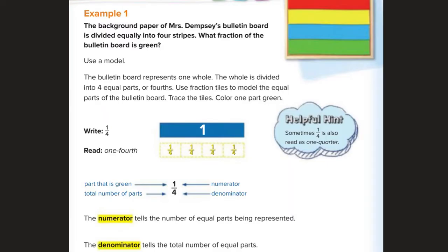So here we go. Example one. The background paper, Mr. Dempsey, Mrs. Dempsey's bulletin board is divided equally, equally, if it's not equal, it's not a fraction, into four strips. What fraction of the bulletin board is green?